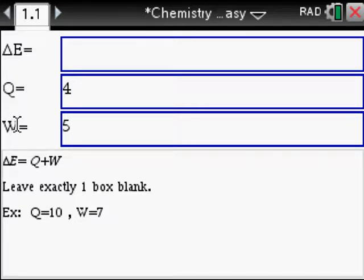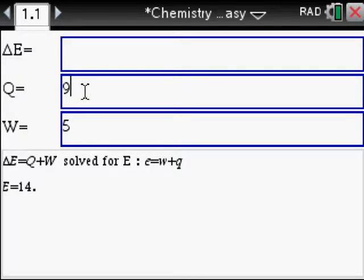So with the chemistry made easy app, it's really simple. Let's change this to be 9 for heat. And so this is the equation and they just write it again. But basically you have heat, 9, work, 5. Answer is right here. Automatic, immediate.